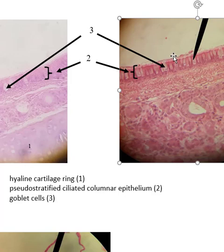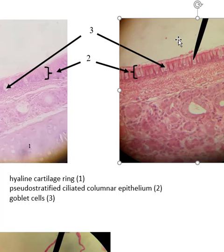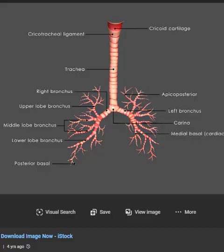Smoking paralyzes the cilia, and if you continue smoking your cells won't even make cilia anymore. All the mucus from goblet cells and secretory glands will then run down into your lungs. If you've been around a smoker waking up in the morning, their 'smoker's cough' is them trying to get all the mucus that pooled in their lungs overnight. If you're considering smoking because you're newly away from home — don't.